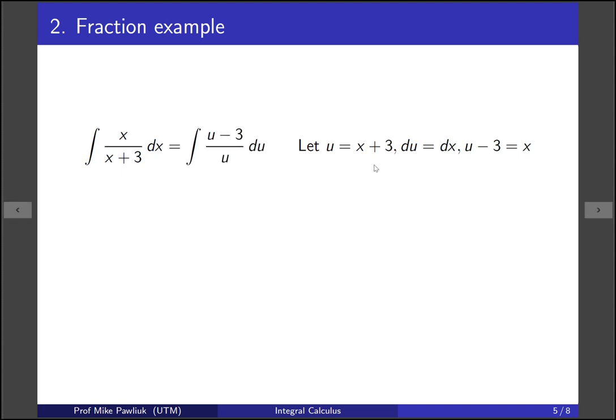Let's make all those substitutions and then we have this fraction. Well what's helpful about this fraction as compared to the first one is that this one we can break up the fraction. So this is u over u minus 3 over u which simplifies to 1 minus 3 over u. And that's not something we could have done with this integral. This fraction doesn't break up but this one does.